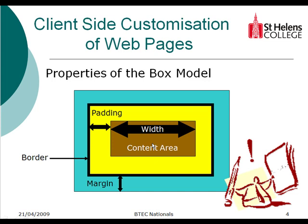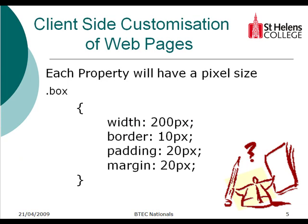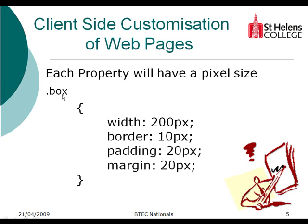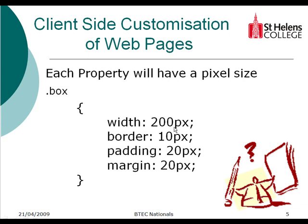Each property within our box model will have a pixel size. So let's say for example this is part of a style sheet — we've got a dot-box label for our box model. We open our curly brackets, close our curly brackets, and place our properties within them. So we set the width at 200 pixels, the border at 10 pixels, padding at 20 pixels, and margin at 20 pixels.